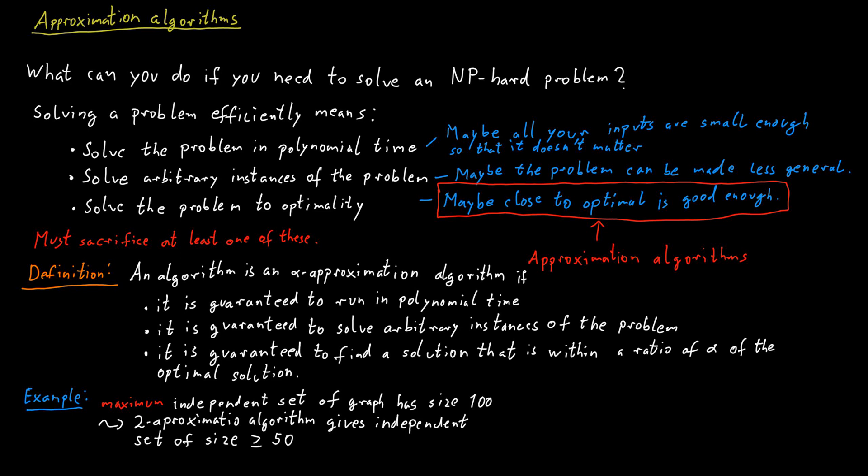Or suppose you want to find a minimum vertex cover. And the optimal minimum vertex cover has size 100. If you have a two approximation algorithm, it should produce a vertex cover of size at most 200.